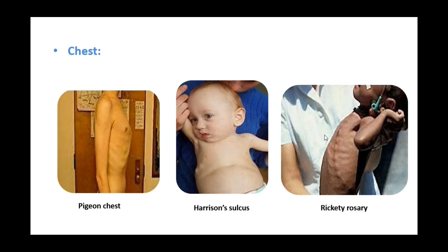Regarding the chest, there are three prominent features. First is pigeon chest, a condition where the sternum becomes prominent. Second is Harrison's sulcus — a horizontal depression along the lower part of the chest corresponding to the insertion of the diaphragm. Third is the rickety rosary, where the costochondral junctions on the anterior chest wall become prominent, giving the appearance of a rosary.